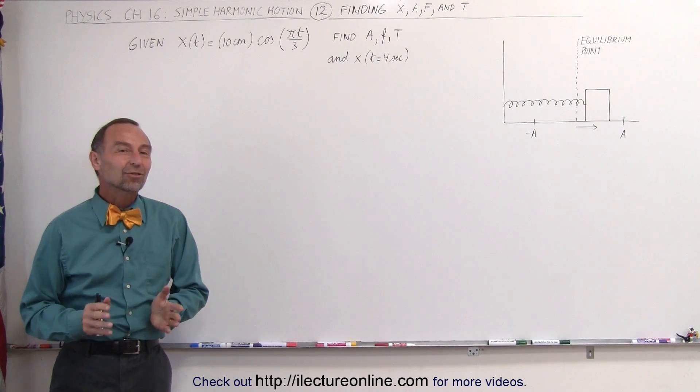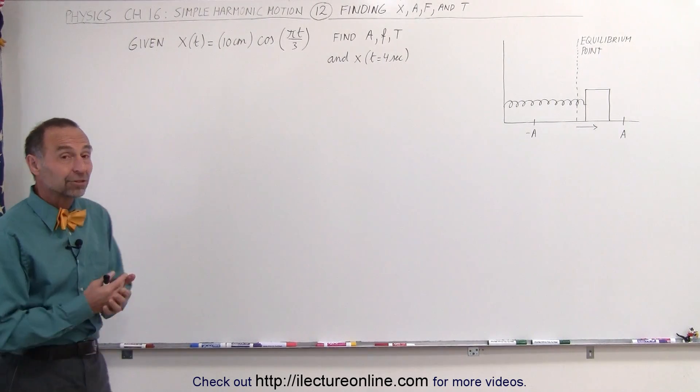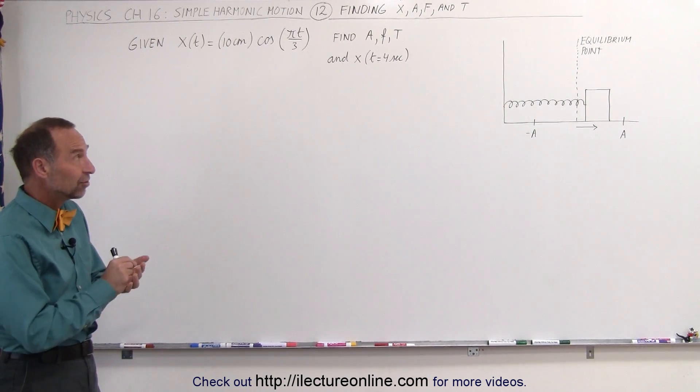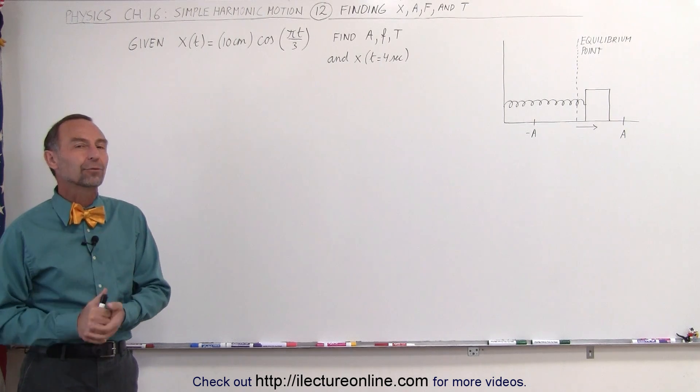Welcome to Electrinal Line. Now let's use the equation where x is a function of time to find things such as the amplitude, the frequency, the period, and yes, the position when t is equal to 4 seconds.